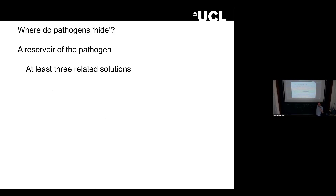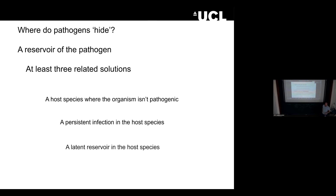Does latency actually provide an advantage in transmission for herpes viruses? If viruses are obligate parasites that can't live outside a host, they need a reservoir. There are three related solutions: a host species where the organism isn't pathogenic — as we see with bats; a persistent infection in the host species as with hepatitis infections; or a latent infection. Persistence and latency arguably could be the same or two sides of the same coin.